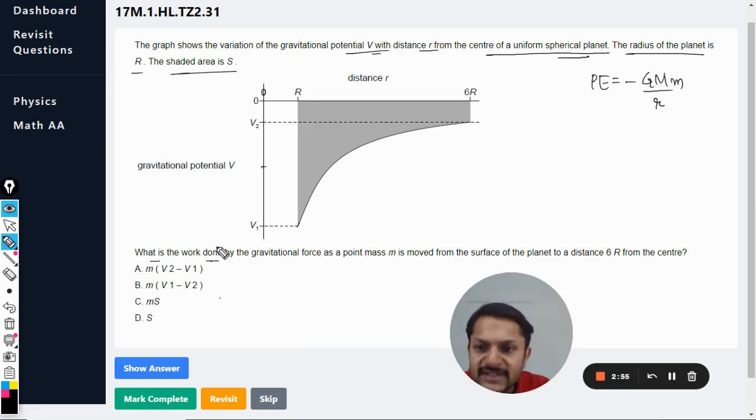Let us consider what is the work done by the gravitational force as the point mass M is moved from the surface of the planet. This is the radius, this is the surface.